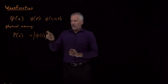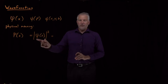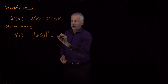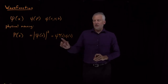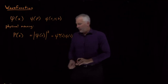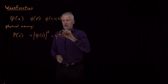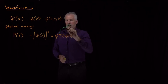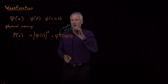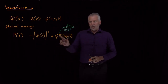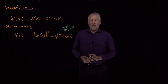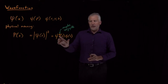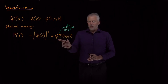These absolute value signs around the wave function before I square it are there to tell us that we don't just square the wave function — that particular calculation means I need to take the wave function times the complex conjugate of the wave function. For now, we're going to ignore that. We'll run into cases where we do have to worry about this complex conjugate, but if the wave function is a real function with only real numbers, not imaginary or complex numbers, then we don't have to worry about it.